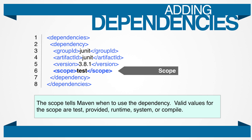Compile means it will use the dependency when you are compiling and it will be included in any dependent projects — the dependency will be included in any deployment artifact. Provided means that you should use the dependency in the class path, but you should expect the JDK or application container to provide the dependency at run time — it won't be included in the deployment artifact. Runtime is similar to provided, but it means it's not required for compilation — it's only needed at run time, and you expect the JDK or application container to provide it.